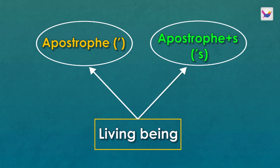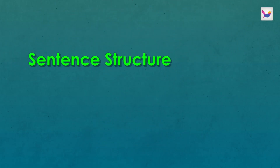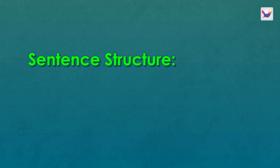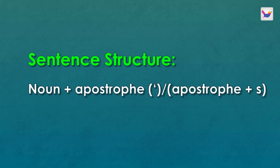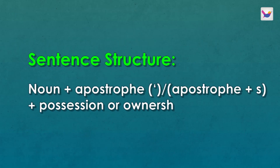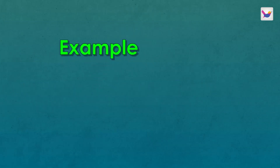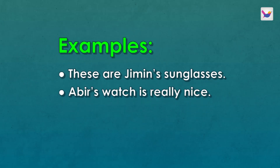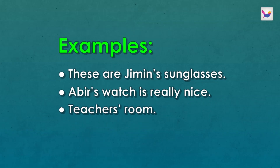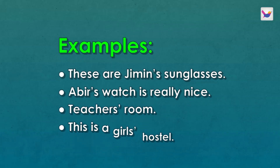This may be a possessive case in English grammar. By using apostrophe S, we use the sentence structure: noun plus apostrophe plus S to show possession or ownership. For example: these are Jimin's sunglasses, Abhi's watch is really nice, Teacher's room, This is a girl's hostel.